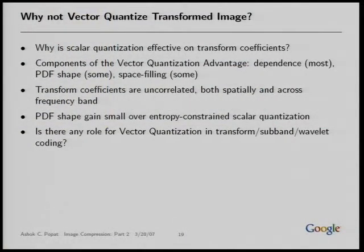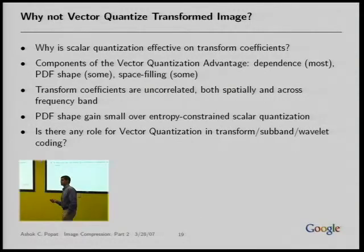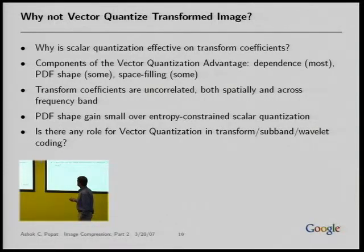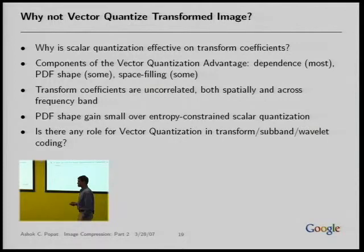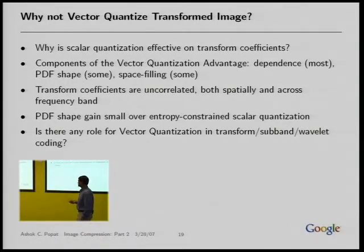Going back to transform coding: why use scalar quantizers after the transform instead of vector quantizers? The transform coefficients are uncorrelated both spatially and across frequency bands — spatially because of the spectral argument, and across frequency bands because of the original argument behind principal component analysis. If there's not much correlation, the main advantage of vector quantization — exploiting statistical dependence — is reduced. So there's not a lot of advantage in using VQ over scalar quantization in that case, though the other advantages remain.